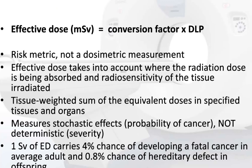Effective dose is a coefficient K times DLP, so effective dose is proportional to DLP. It is a risk metric, not a dosimetric measurement. Effective dose takes into account where radiation dose is absorbed and the radiosensitivity of the tissue irradiated. One Sievert of effective dose carries a 4% chance of developing a fatal cancer in an average adult and a 0.8% chance of hereditary defect in offspring.